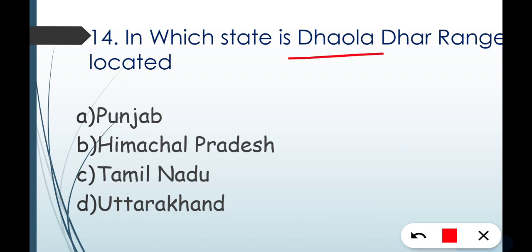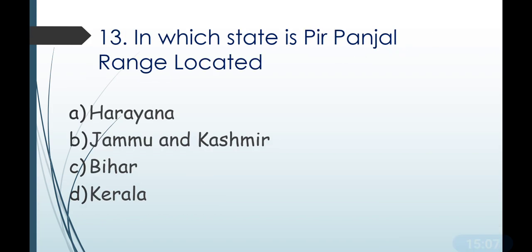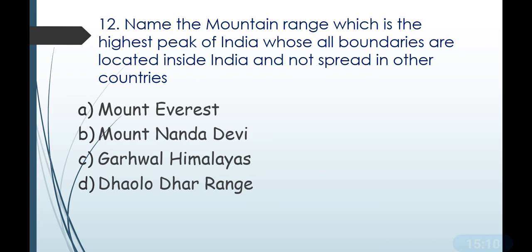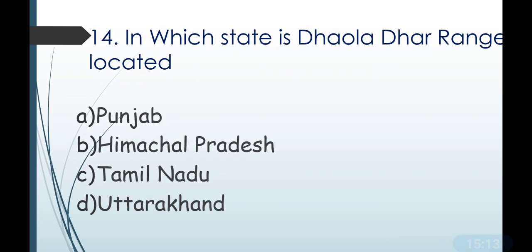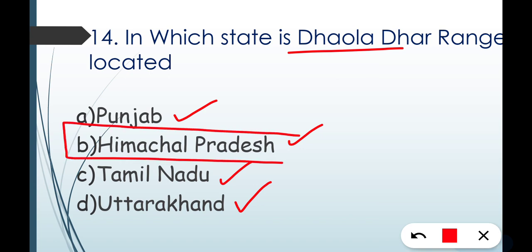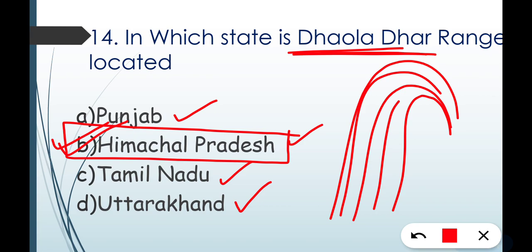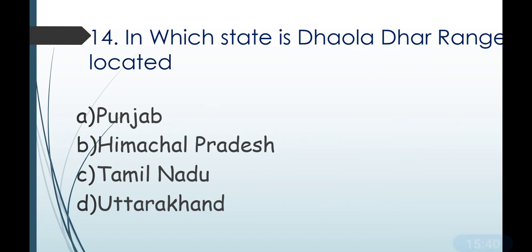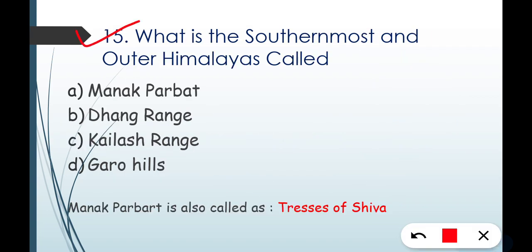Question number fourteen: in which state is Dhauladhar Range located? Options are Punjab, Himachal, Tamil Nadu, or Uttarakhand. The correct answer is Himachal Pradesh. A memory trick: 'Dhaula' sounds like something falling rapidly from speed — so remember it like that. You can make any trick to remember: Dhauladhar is in Himachal Pradesh.